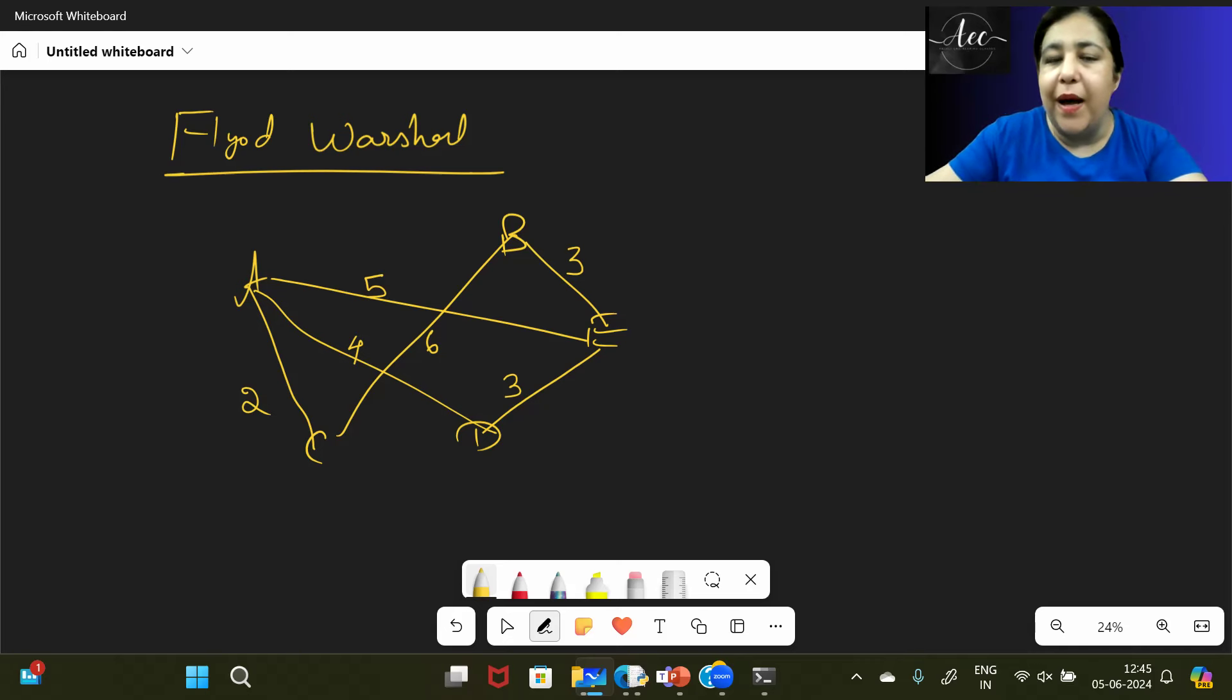When you have made this graph, you will have the adjacency matrix. What will happen in that? You will have 5 vertices, you will have 5 rows and 5 columns. So I have A, B, C, D, E and I also have here A, B, C, D, E.